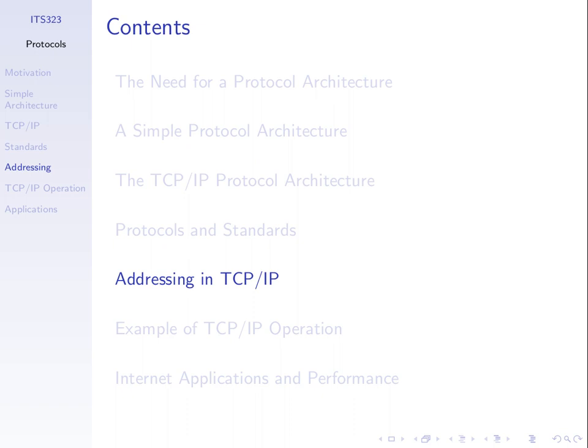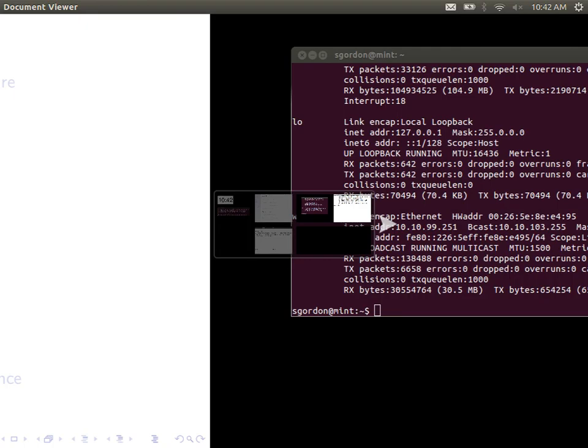Last week we went through protocols and protocol architectures, finishing with some examples about addresses. Today we're going to go through a bit more about addressing and then finish talking about the last topic, which is performance in the internet.